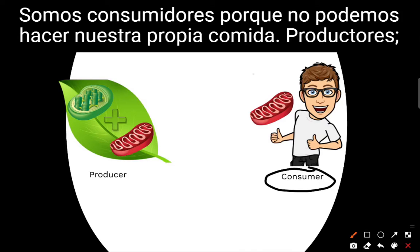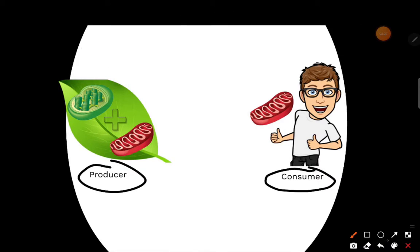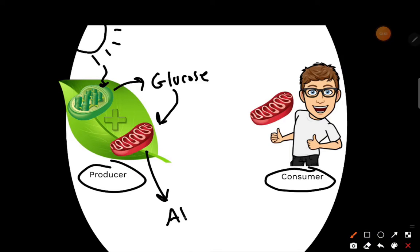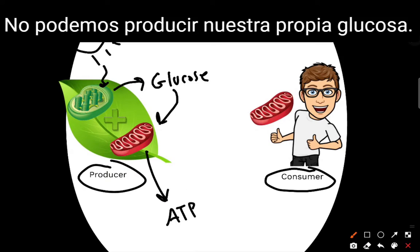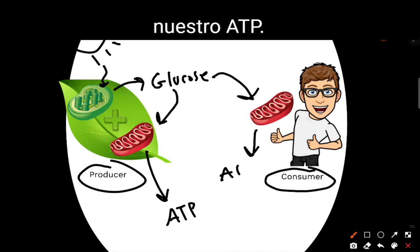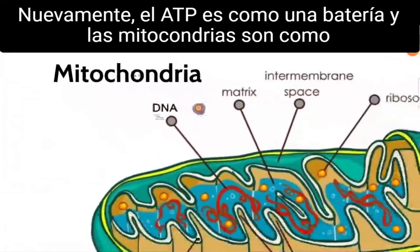We are consumers because we can't make our own food. Producers have chlorophyll, and sunlight is used to help make glucose. That energy is transferred to the mitochondria, and that makes ATP. We cannot make our own glucose, so we have to eat it from either plants or animals. Again, ATP is like a battery, and the mitochondria is like a battery charger.